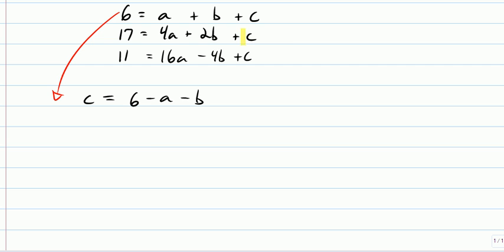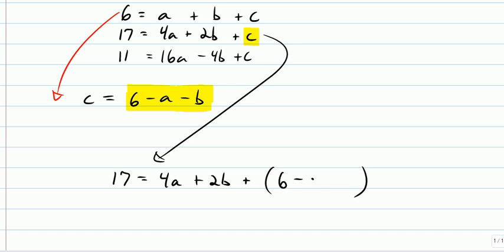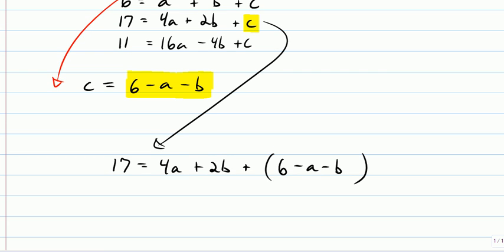So that doesn't seem very significant. If 6 is a plus b plus c, then c is 6 minus a minus b. So I'm going to consider that first equation kind of used and I'm going to take c in the second equation and I'm going to plug in 6 minus a minus b. So we'll do some work there. So 17 equals 4a plus 2b plus c. Well, c is 6 minus a minus b. All right, so you're like, wow, this looks more complicated. That's okay. We do have a, maybe the equation looks longer, but we only have a's and b's in it at least now.